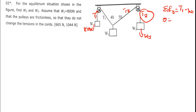So T1 minus the W1 is 800. Shift 800 to the other side, therefore T1 is 800N.